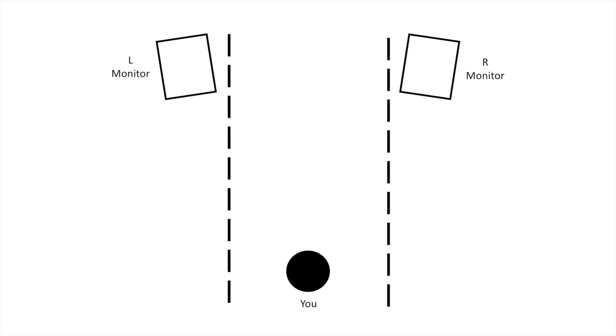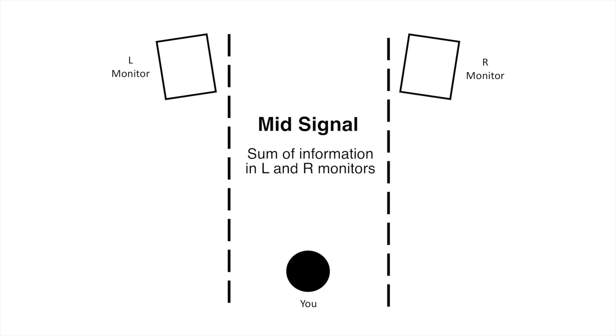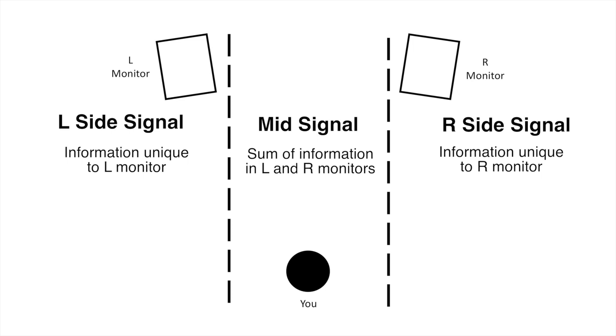In a DAW we split a stereo signal into two separate signals. The mid signal contains the sum of the information that is in both the left and right monitors, and the side signal contains the information that is unique to either the left or right monitors. It's important to know that the side really contains the information from the left and the phase-inverted information from the right, which cancels out any common information. So we need to bear in mind that mid-side processing will not always give us a perfect separation of the signals.